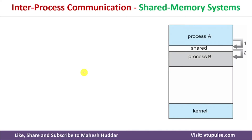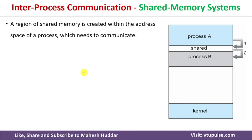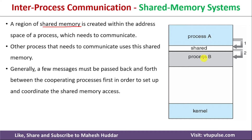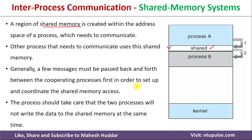The first one is known as Shared Memory System. In this case, a region of Shared Memory is created within the address space of the process which needs to communicate. For example, let us say that Process A and Process B want to share some information. We need to create a Shared Memory region. Whenever A wants to send some information, it will be placed into this Shared Region. Whenever the information is available on the Shared Region, it will be read by Process B, so that A and B can communicate with one another.